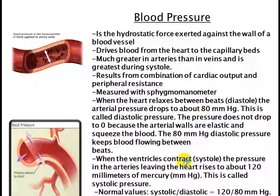When the ventricles contract — called systole — the pressure in the arteries leaving the heart rises up to 120 mmHg, which is called systolic pressure. So during relaxation of the heart this is diastolic pressure, and during contraction of the ventricles this is systolic pressure. The normal value is 120 over 80 mmHg.